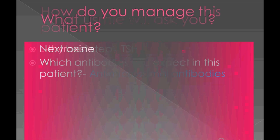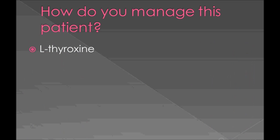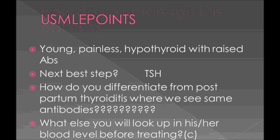What antibodies do you expect? Anti-microsomal antibodies and anti-thyroglobulin antibodies. How do you manage this patient? Just give levothyroxine. The exam point: a young patient with painless hypothyroid and raised antibodies — the best next step is TSH first, then you can measure the antibodies.